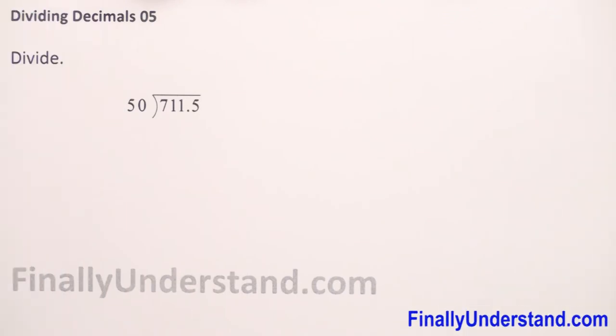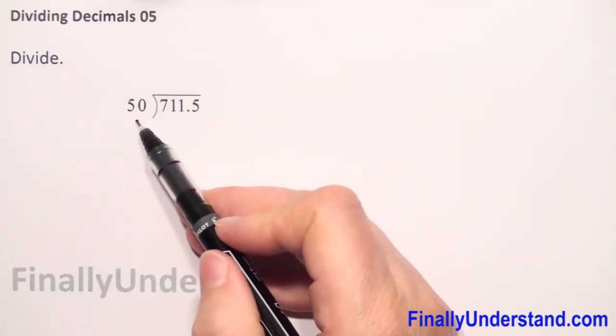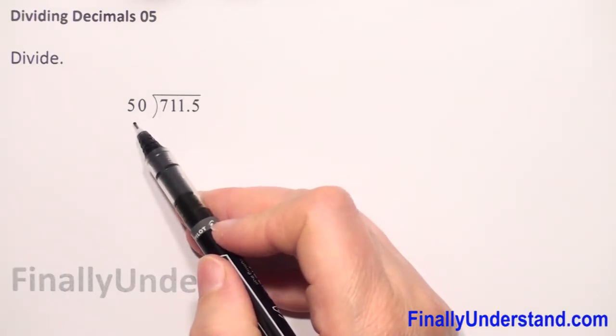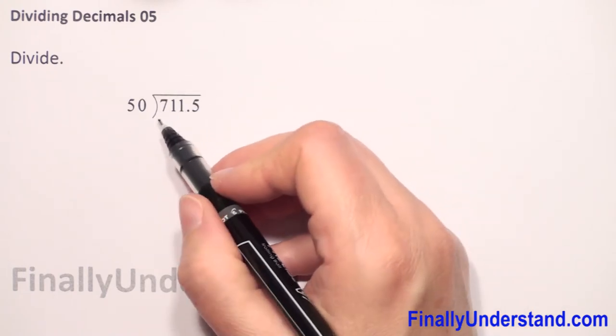We have division. We have a decimal number and our divisor is a whole number. So when the divisor is a whole number, everything is okay. We don't have to do anything. We just start the long division.